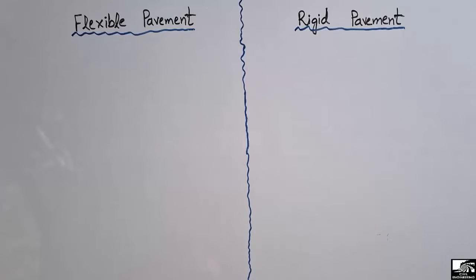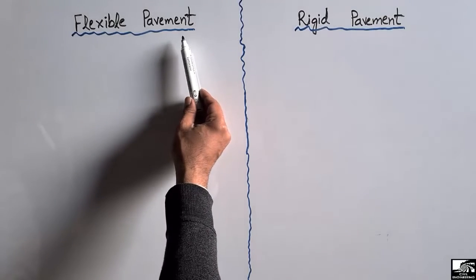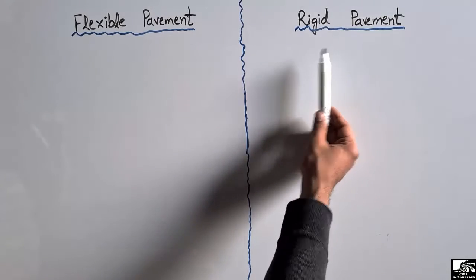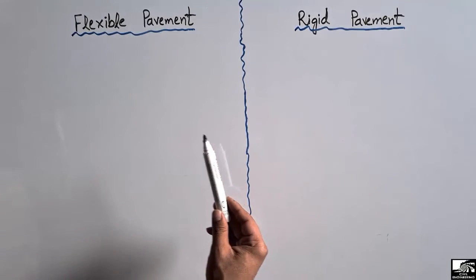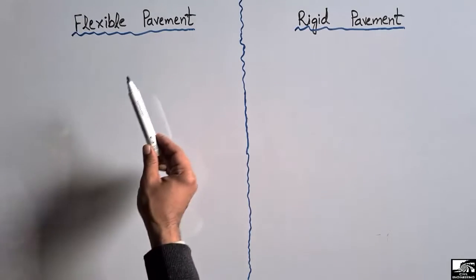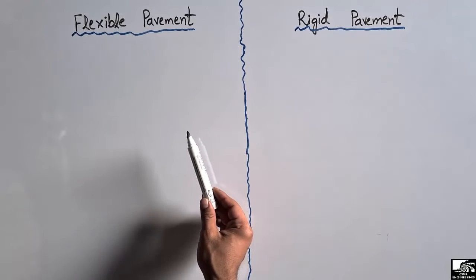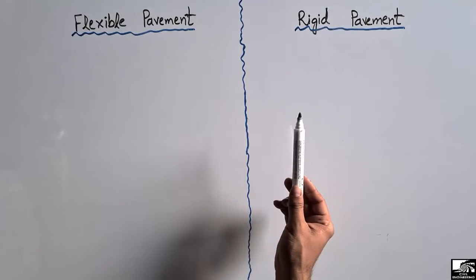Hello guys, welcome back to the Civil Engineering YouTube channel. Please subscribe to our channel for daily civil engineering videos. Today our lecture is about the difference between flexible pavement and rigid pavement. There are two main types of pavement — flexible and rigid — and each type has its own advantages and disadvantages.